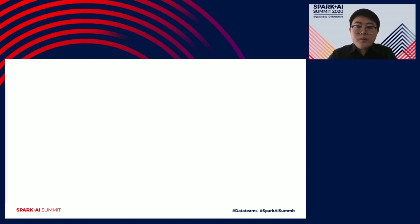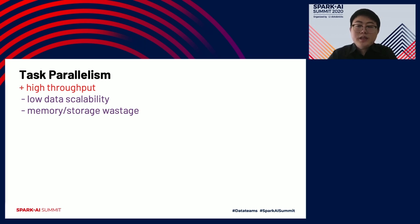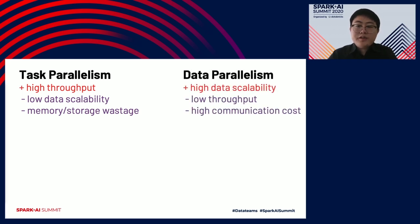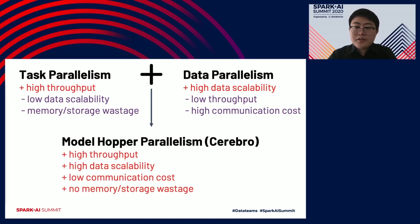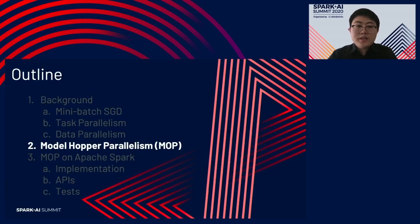To recap: task parallelism has high throughput but low data scalability and has wastage. Data parallelism is very scalable but has low throughput because of high communication cost. A natural question is: can we combine the advantages of both but leave the disadvantages behind? The answer is yes. The result is Model Hopper Parallelism and Cerebro, our software system that implements it. It has high throughput, high data scalability, low communication cost, and low storage wastage — everything you want in one box.